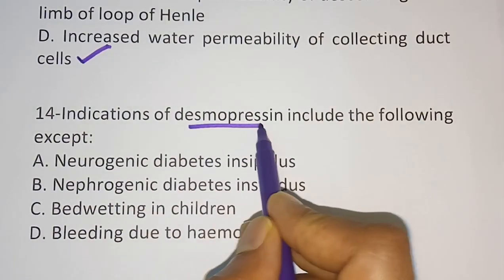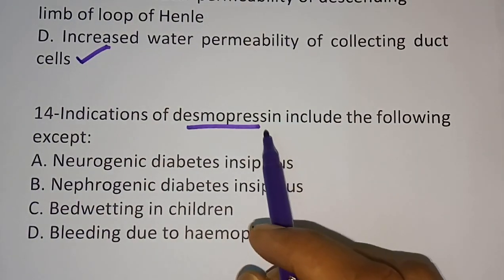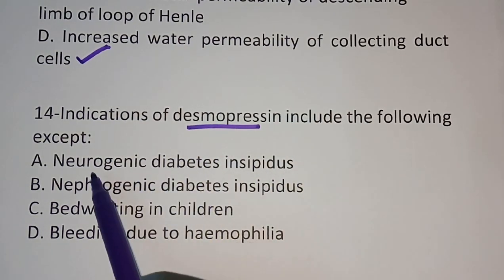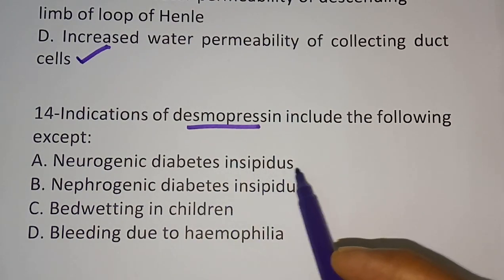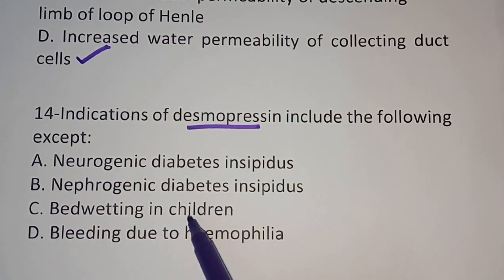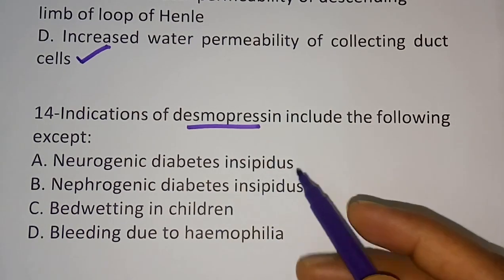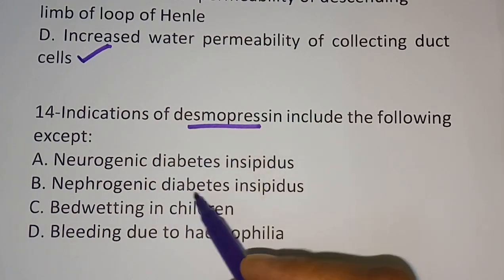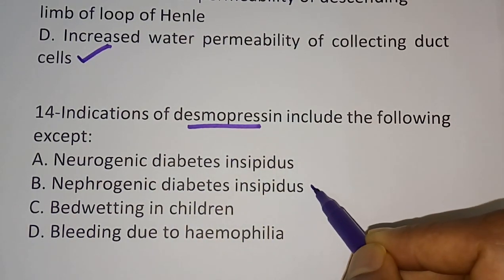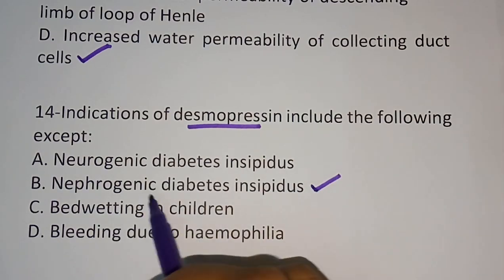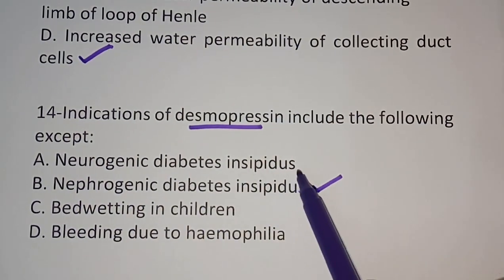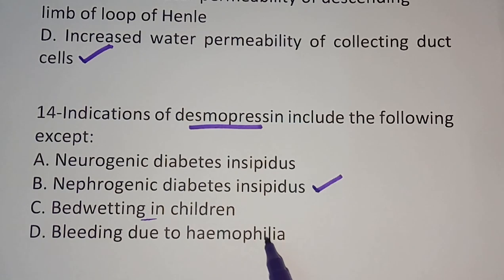The last question: Desmopressin is also an antidiuretic medicine. Indications of desmopressin include the following except? Options are neurogenic diabetes insipidus, nephrogenic diabetes insipidus, bed wetting in children, and bleeding due to haemophilia. The correct answer is nephrogenic diabetes insipidus — desmopressin is not used for nephrogenic diabetes insipidus. It can be used for neurogenic diabetes insipidus, bed wetting in children, and bleeding due to haemophilia.